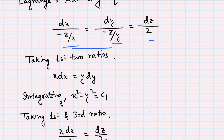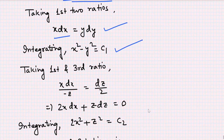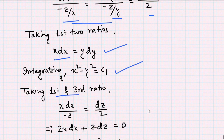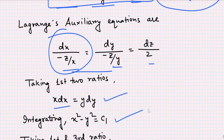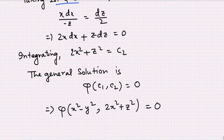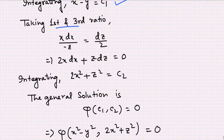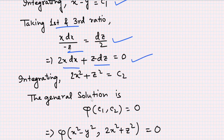Taking the first two ratios: the z terms cancel, giving x dx = y dy. Integrating gives x² − y² = c₁, which is the first integral. Taking the first and third ratios gives x dx/(−z) = dz/2, which rearranges to 2x dx + z dz = 0. Integrating gives 2x² + z² = c₂, the second integral.